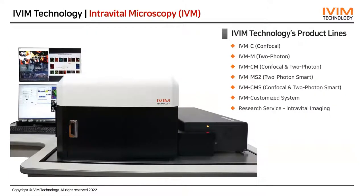iBeam Technology provides an all-in-one intravital confocal and two-photon microscopy system, which includes IVM-C, IVM-M, IVM-CM, IVM-MS-2, IVM-CMS, and customized systems. IVM-C is the confocal-only model; IVM-M is the multiphoton-only model with a wavelength-tunable laser; and IVM-CM is the most comprehensive combined confocal and two-photon model. IVM-MS is the most compact two-photon version with a 920 nm fixed-wavelength laser module. The customized system is fully optimized for various purposes including large animal imaging, retina imaging, endomicroscopy, and rotating objective systems for brain imaging.